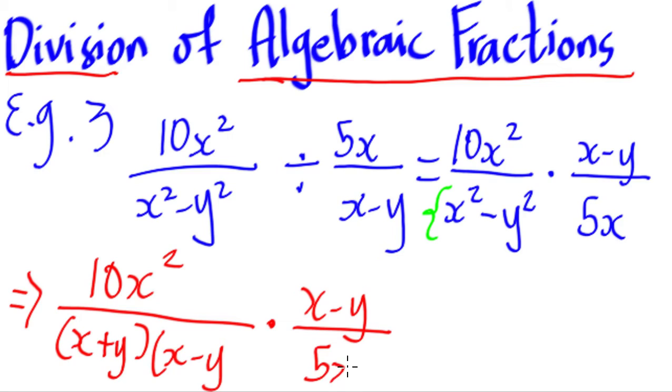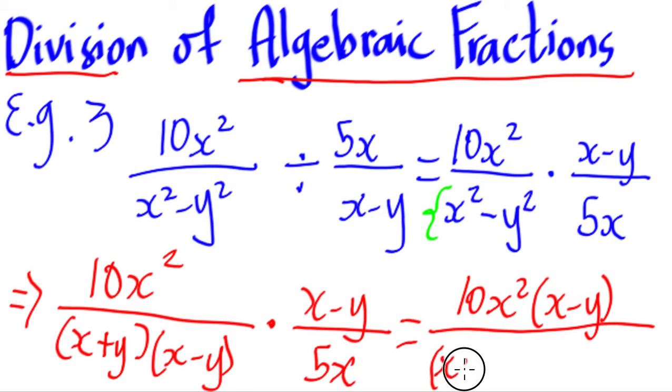And then I think we can put them in a single fraction right now. And if we do that, what we have is 10x squared times x minus y. And what we'll have in the denominator is x plus y times x minus y times 5x.